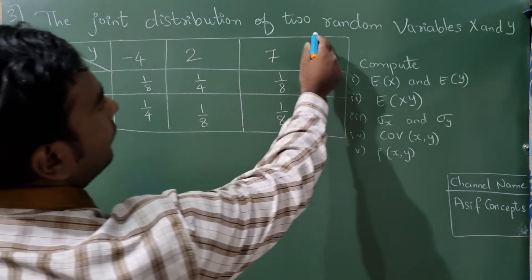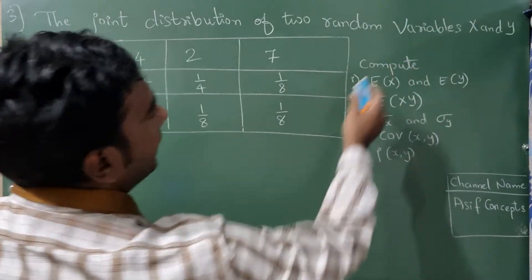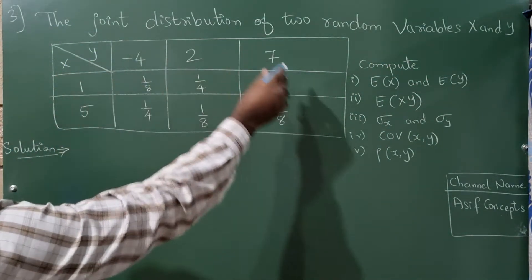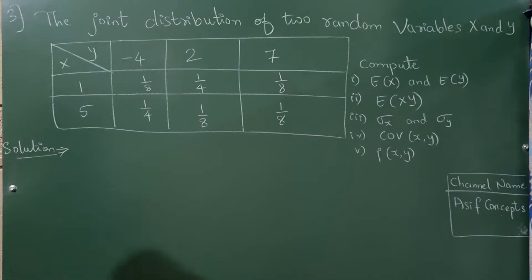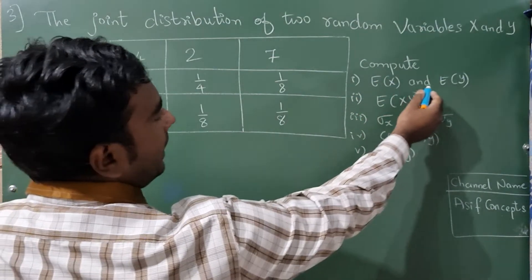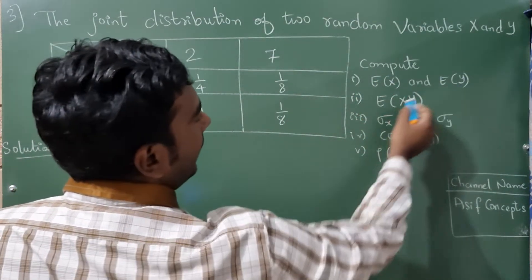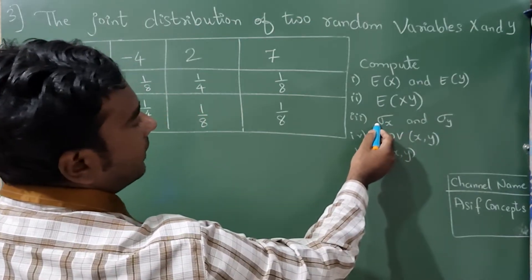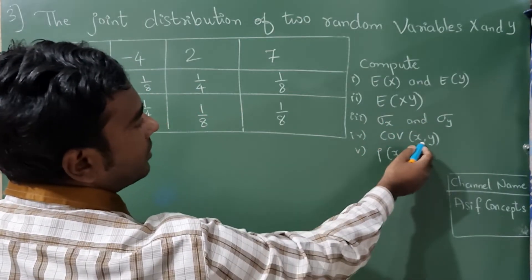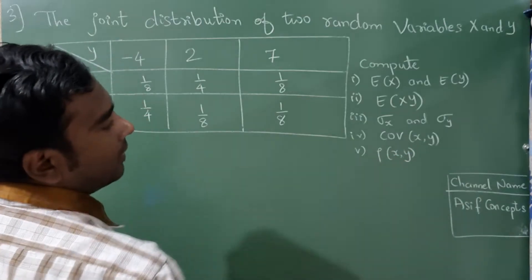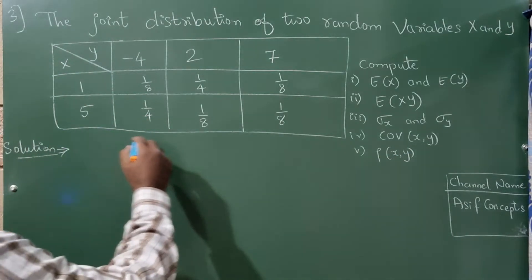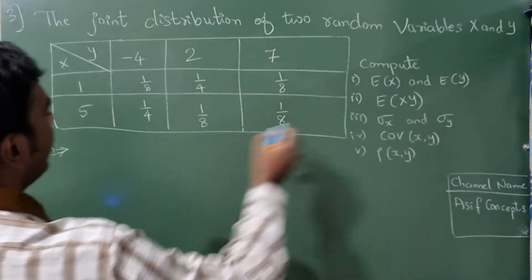We are given the joint distribution of two random variables X and Y in a table. The values we need to find are E(X), E(Y), E(XY), σ(X), σ(Y), covariance of X and Y, and the correlation coefficient. Let us start with E(XY), which is very easy.